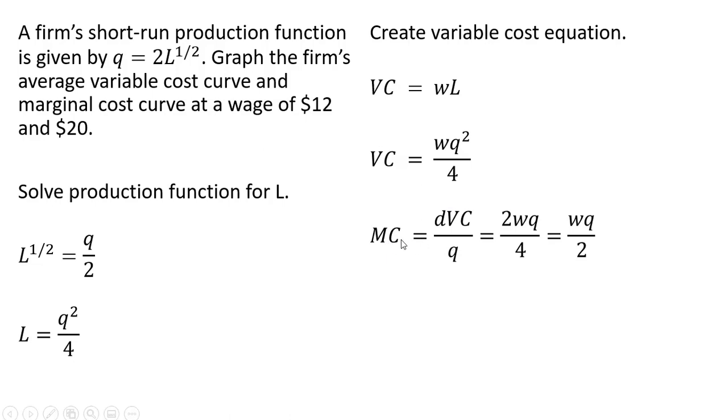Let's get marginal cost by taking the derivative of the variable cost equation with respect to Q. So this exponent here comes down in front. And then we subtract 1 from the exponent. We have this step right here. And then I'll just simplify to the following.